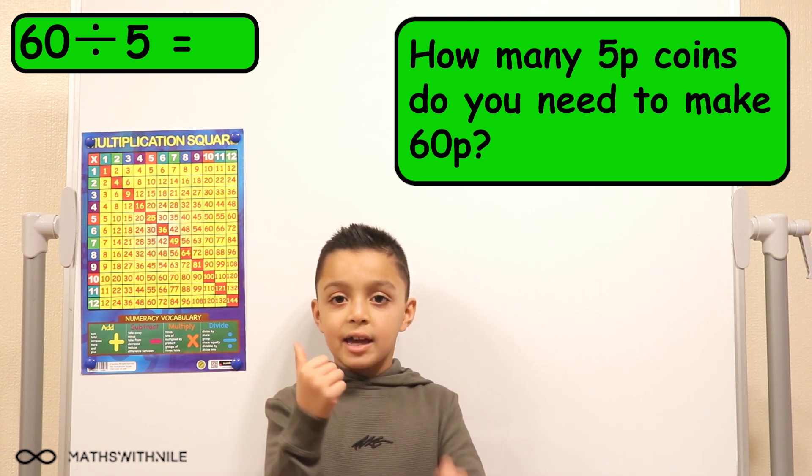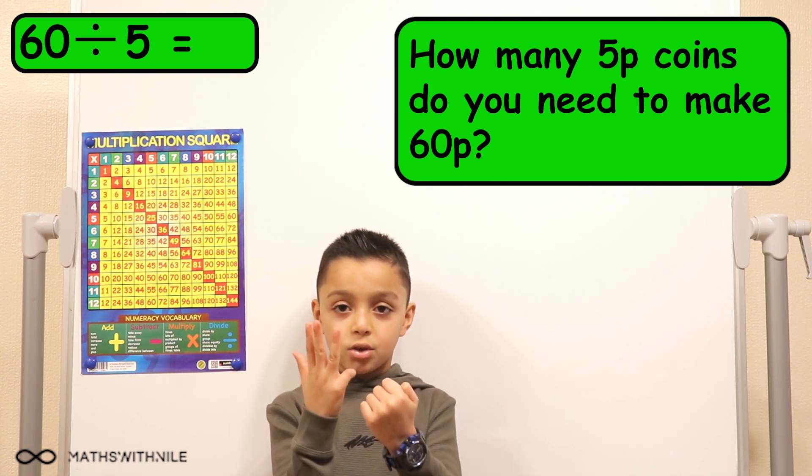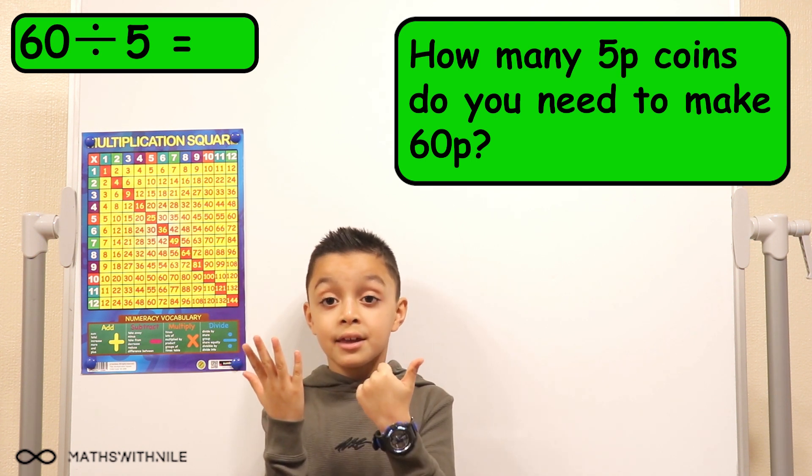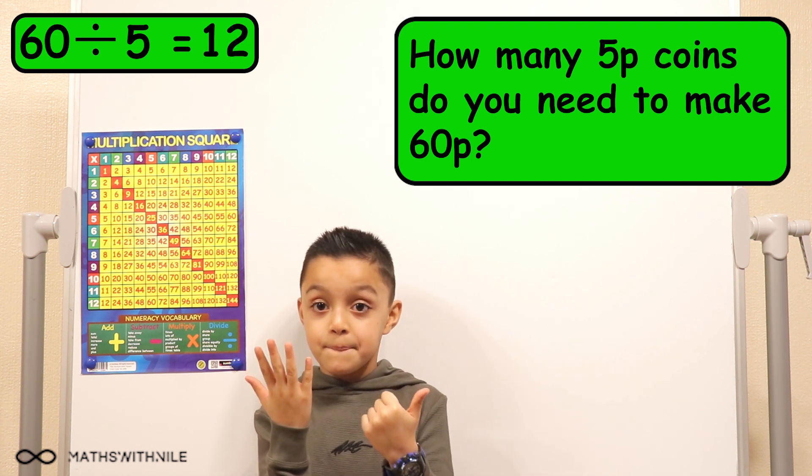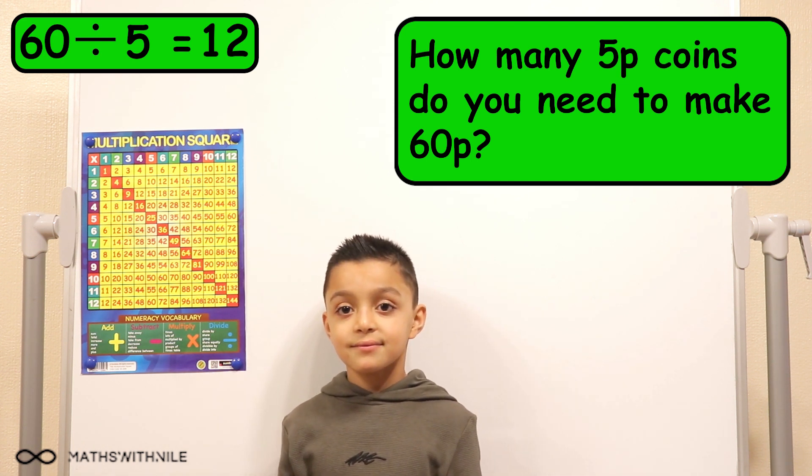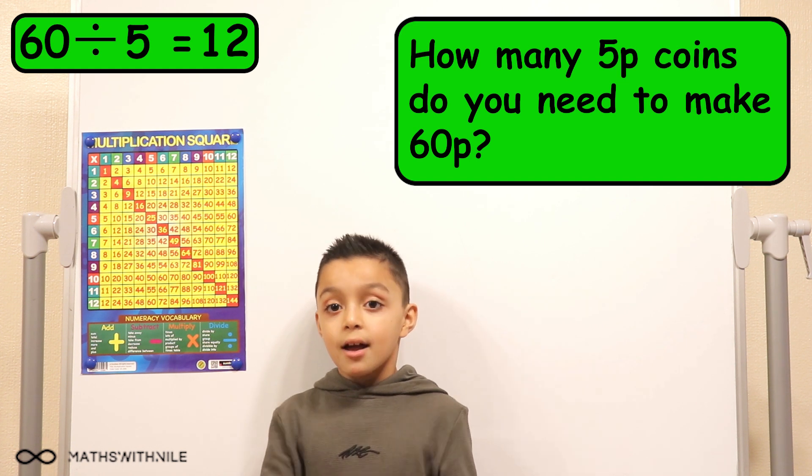Okay. So 5, 10, 15, 20, 25, 30. 6 plus 6 equals 12. So you think the answer is 12? Yeah. Using your method. So should we check how many 5s go into 60 on your fingers again?